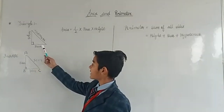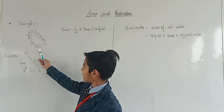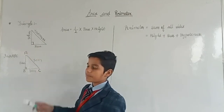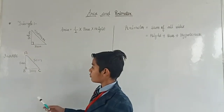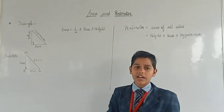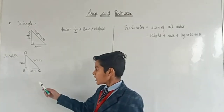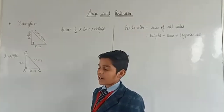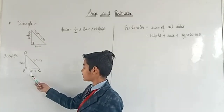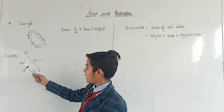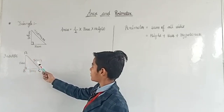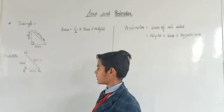This is a right-angle triangle. This is its base, this is its height, and this is its hypotenuse. Now we have an example — we will find the area of this right-angle triangle. The base is 3 cm, the height is 4 cm, and the hypotenuse is 5 cm.